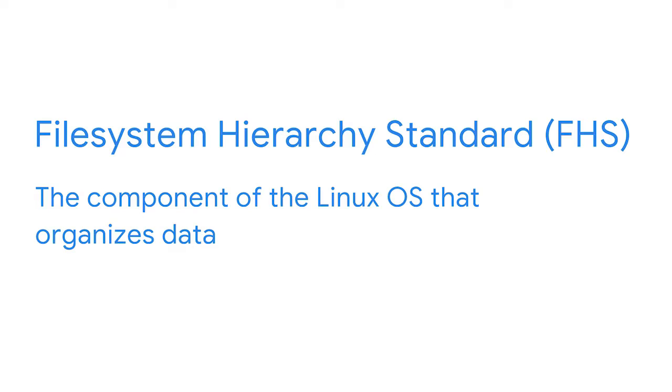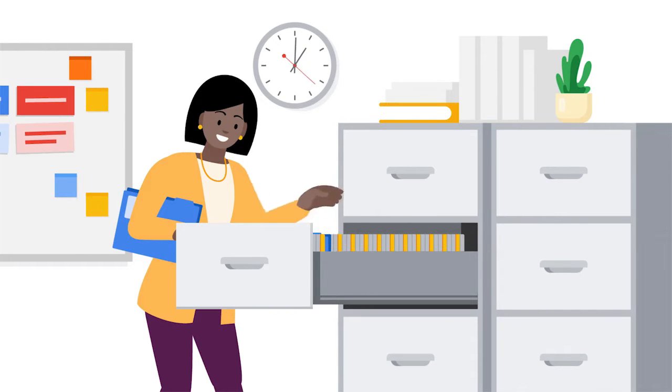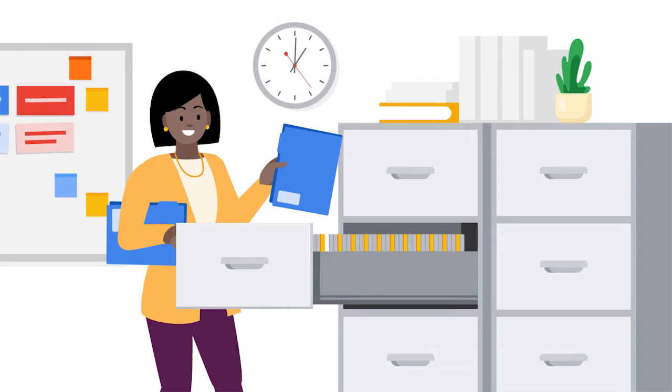Previously, we learned about the two types of user interfaces, the GUI and the CLI — you can think of the shell as a CLI. Another element of the architecture of Linux is the file system hierarchy standard, or FHS. It's the component of the Linux OS that organizes data. An easy way to think about the FHS is to think about it as a filing cabinet of data — it's how data is stored in a system so it can be found when accessed.